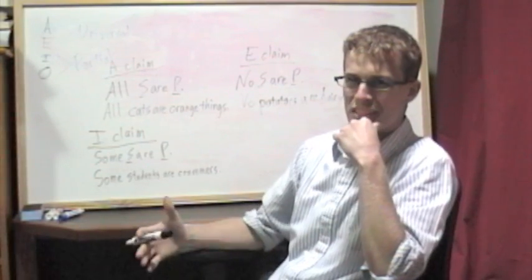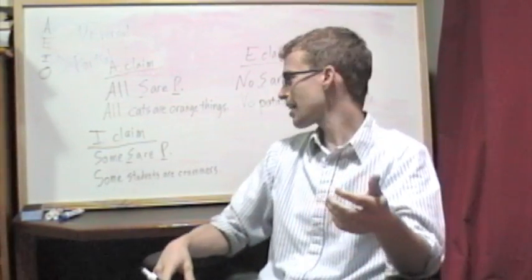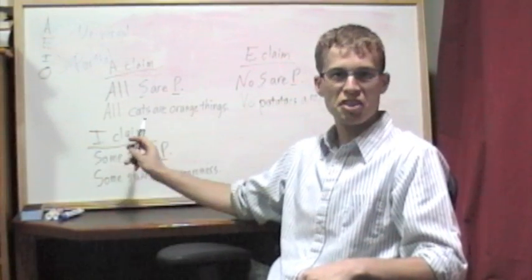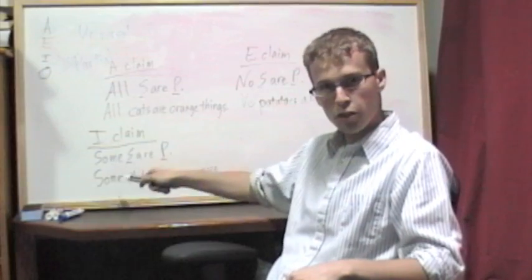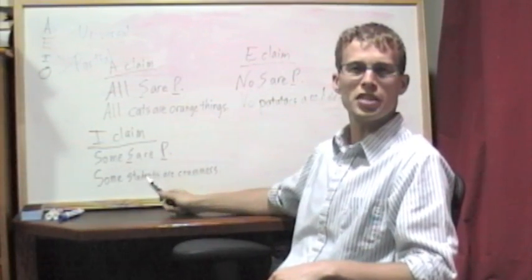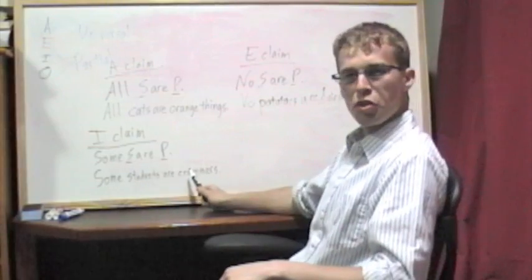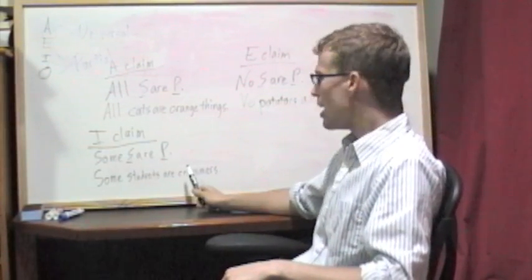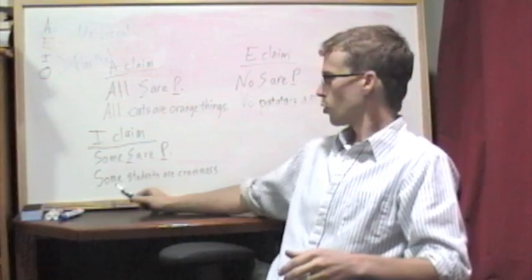So, for this kind of claim to be true, all we need is that one member of this first class, of the subject class, represented by our subject term, students in this case, we just need one of those things to also be a member of the second class, the class of crammers.